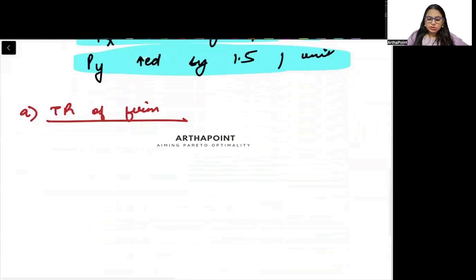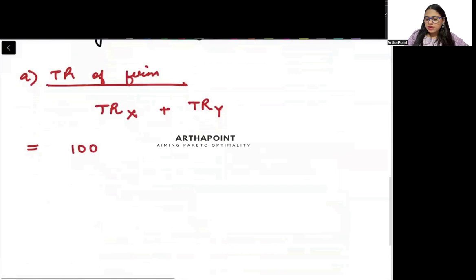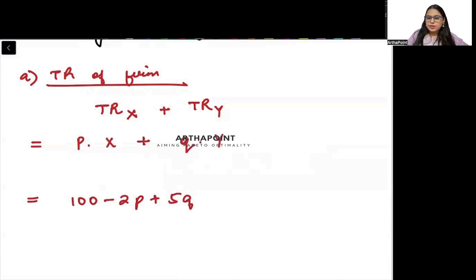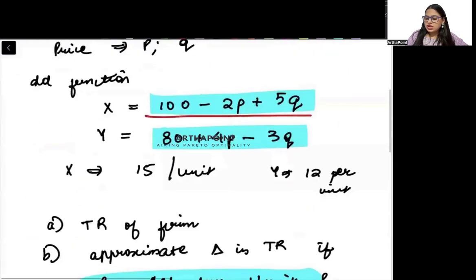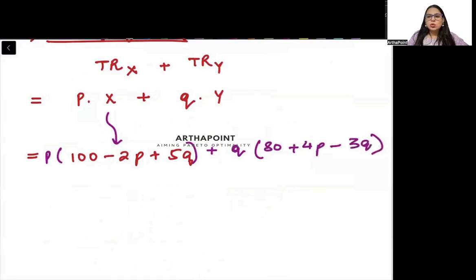What will be total revenue of the firm beta? Total revenue of firm can be written as total revenue from good X plus total revenue from good Y. Total revenue of good X will be price of good X into quantity of good X. Total revenue of good Y will be price of good Y into quantity of good Y. So price of good X is P into quantity (100 minus 2P plus 5Q), plus price of good Y is Q into quantity (80 plus 4P minus 3Q). This will be the total revenue of the firm.